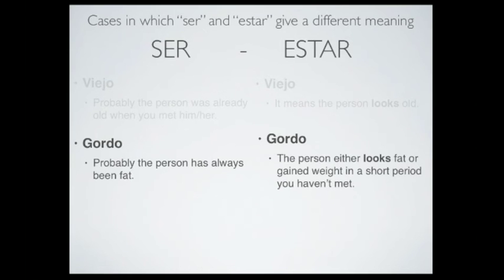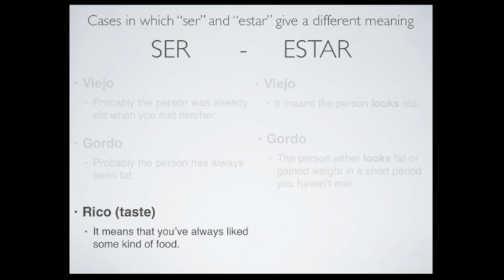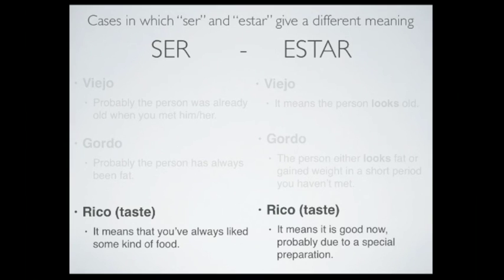Another word is 'rico,' 'sabroso,' 'delicioso.' When we talk about taste, we say 'esto es rico' when we mean that we usually like that food — for example: 'la pizza es rica.' In that case, we use ser. On the other hand, we use 'está rico' if we mean something is particularly good right now — for example, if we try a new preparation or a new way of making something, you can say 'la pizza está muy rica,' because you added new ingredients or made it in a different way.